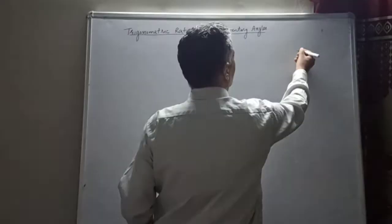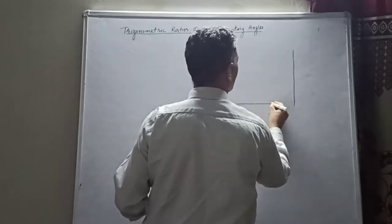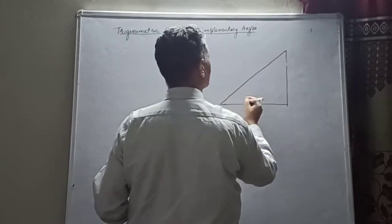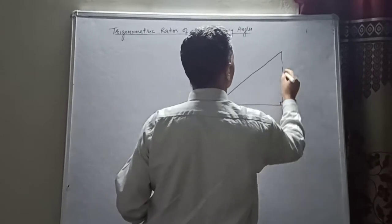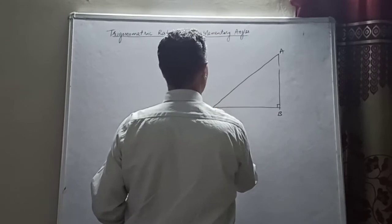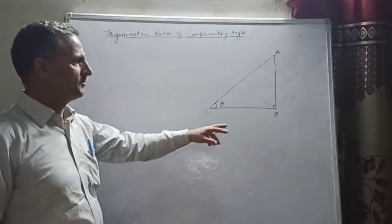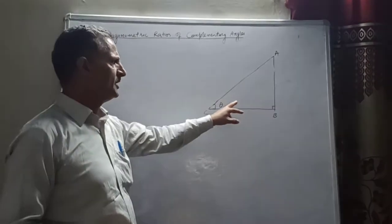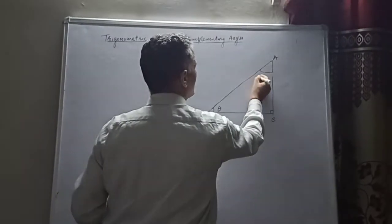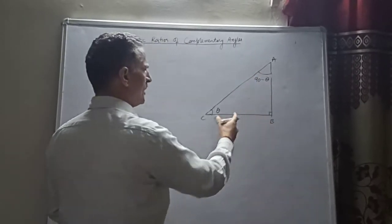I will make a right angle triangle — this is A, B, C. It is a right angle triangle. Let the base angle be theta. If you see, this angle is 90 degrees, this is theta, so this angle will be 90 minus theta.